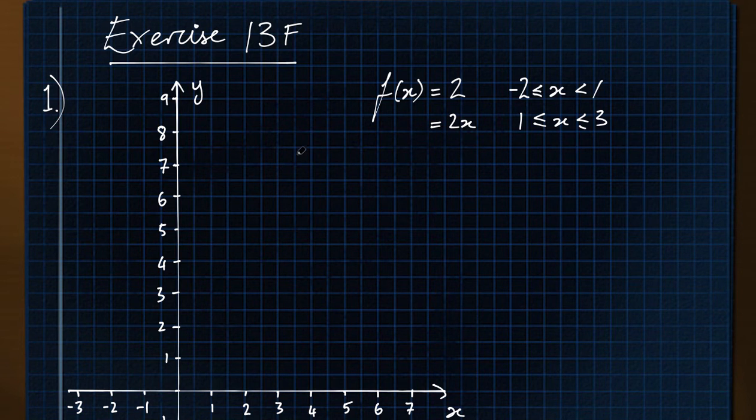This is drawing graphs where there's more than one section in the domain. So here we've got x from minus 2 to 3.